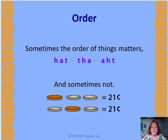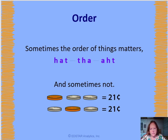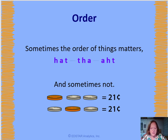One of the things that's true about just everything is sometimes the order of stuff matters and sometimes it doesn't. And this is related to place value, so it's important to understand whenever you see something like words or numbers or coins — in math you separate them into categories of things where the order matters versus the order doesn't matter.